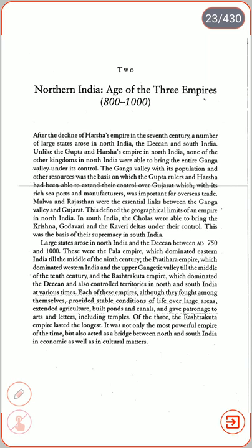After the decline of Harsha's empire in the 7th century, a number of large states arose in North India, the Deccan and South India. Unlike the Gupta and Harsha's empire in North India, none of the other kingdoms were able to bring the entire Ganga valley under their control. The Ganga valley, with its population and resources, was the basis upon which the Gupta rulers and Harsha had extended their control over Gujarat, which with its rich seaports and manufacturers was important for overseas trade. Malwa and Rajasthan were the essential links between the Ganga valley and Gujarat, defining the geographical limits of an empire in North India.